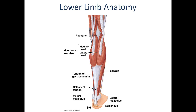Moving around to the posterior compartment of the leg, we have the primary plantar flexors of the foot and the remaining knee flexors. Most superficially, we have the gastrocnemius muscles, which span both the knee joint and the ankle joint. At the knee joint they produce knee flexion, and at the ankle joint they are responsible for plantar flexion.